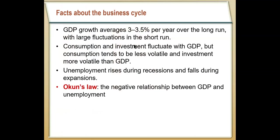We call these short-run fluctuations business cycles. In the US, on average, our total GDP grows about three or three and a half percent a year in the long run. But we see a lot of variability in the short run. Sometimes GDP growth is really high — we're growing at 5% a year. Sometimes growth is really low — we're only growing at 1% a year. Sometimes our growth is even negative and we're in a recession.